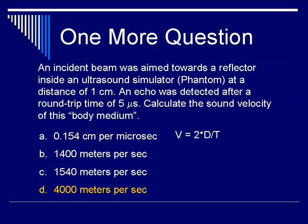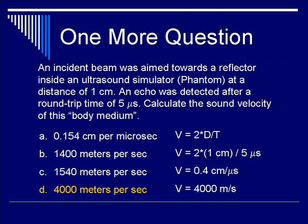The correct answer is D, 4000 meters per second — right away you know this is probably bone. Using V equals 2 times D divided by T, plug in distance of 1 centimeter and round trip time of 5 microseconds. You get a velocity of 0.4 centimeters per microsecond, which translates to 4000 meters per second. This phantom is most likely simulating sound travel in a bony medium.